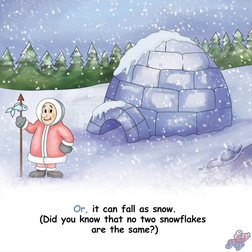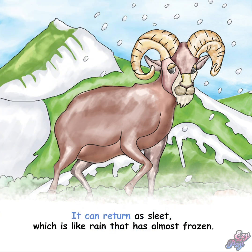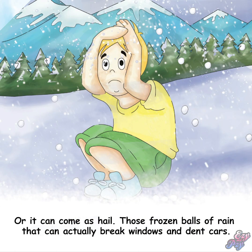Or it can fall as snow — did you know that no two snowflakes are the same? It can return as sleet, which is like rain that has almost frozen. Or it can come as hail — those frozen balls of rain that can actually break windows and dent cars.